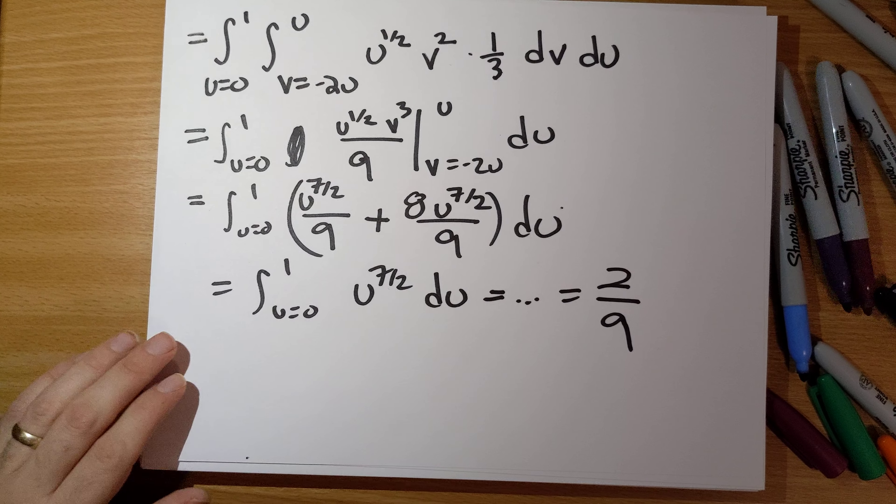So let's state the takeaway with a slightly different twist. Instead of doing substitution to change integration over a nasty region into integration over a nice region, we did substitution to change a nasty integrand into a far, far nicer integrand, accepting a slightly more complex region as the trade-off.